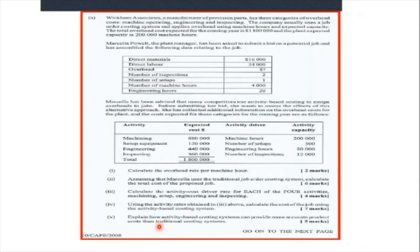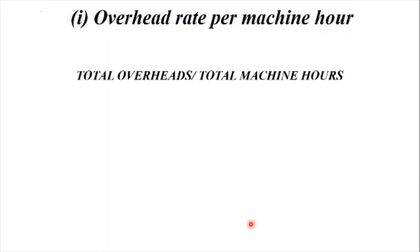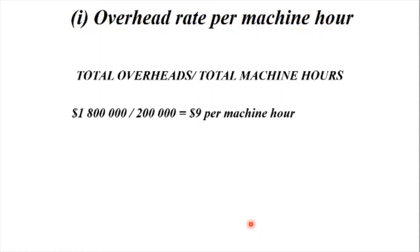5. Explain how the activity-based costing system can provide more accurate product costs than traditional costing systems. First, the overhead rate per machine hour. The overhead rate per machine hour can be calculated by dividing the total overheads by the total machine hours. That would be $1,800,000 divided by 200,000, which equals $9 per machine hour.